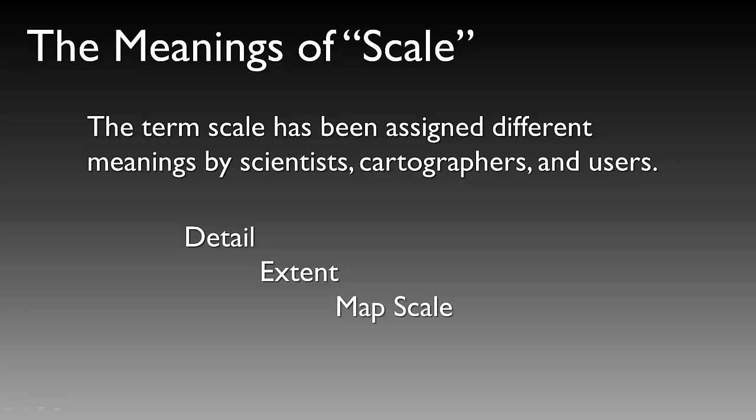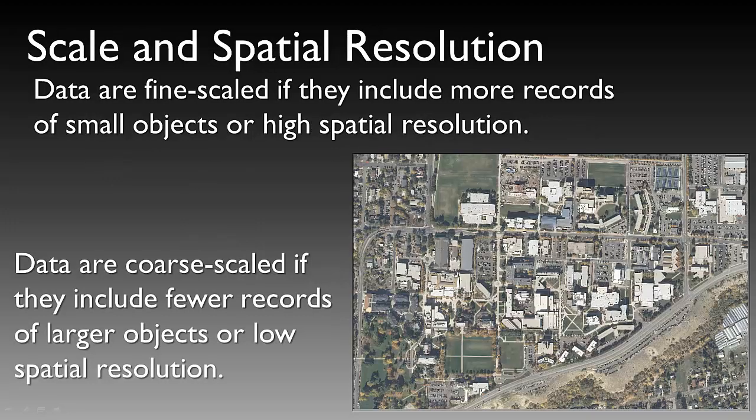No GIS class is complete without discussing the meanings of scale. The term scale has been assigned different meanings by different users including scientists, cartographers, and general users. Scale can represent detail, extent, or the map scale of the map itself. Data are fine-scaled if they include more records of small objects or high spatial resolution. Data are coarse-scaled if they include fewer records, larger objects, or low spatial resolution.